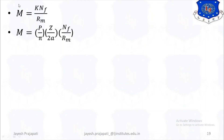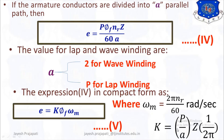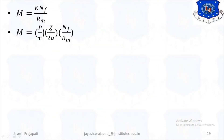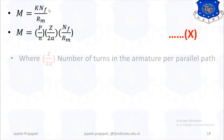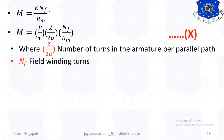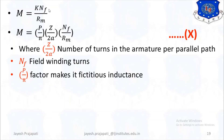M is equal to K·NF divided by RM, and replacing K with P·Z divided by 2π·A gives M equals P·Z·NF divided by 2π·A·RM, taken as equation 10. Here Z/2A is the number of armature turns per parallel path, NF is the field winding turns, and the P/π factor relates to the inductance.